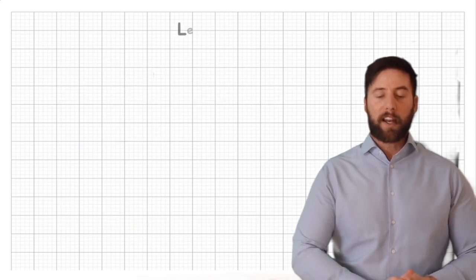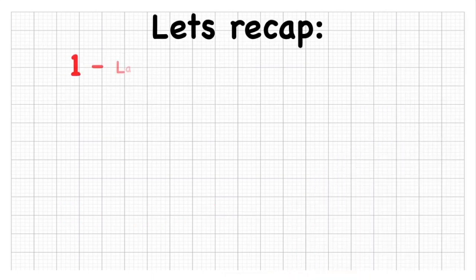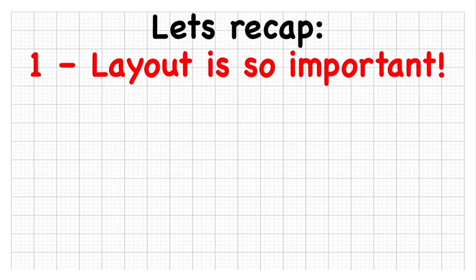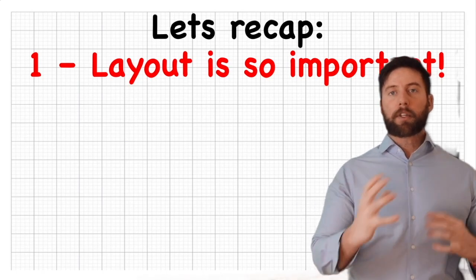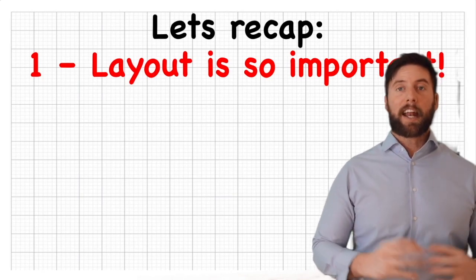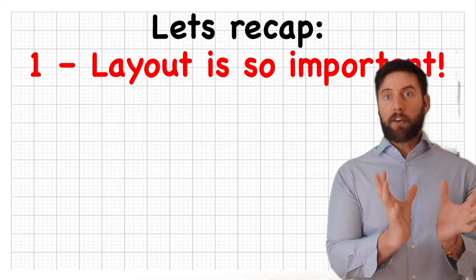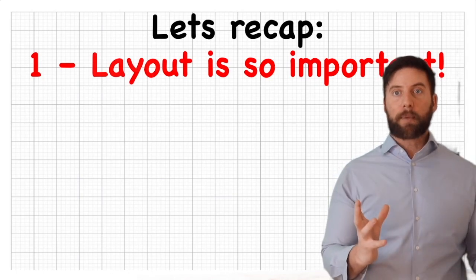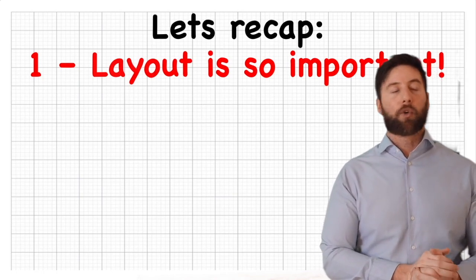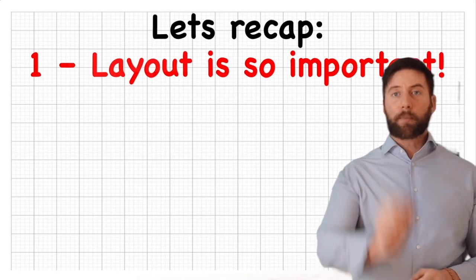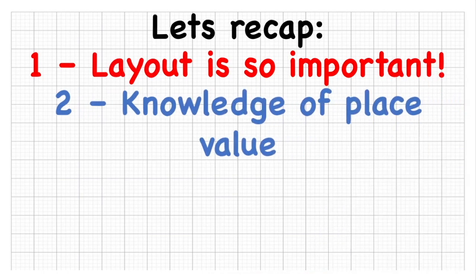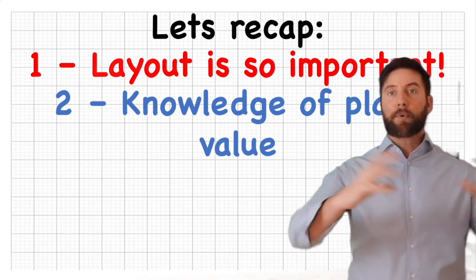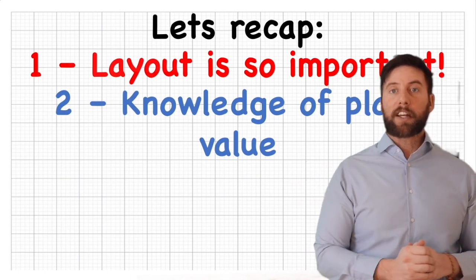Let's recap the important things from today. First, it's really important to put our layout and numbers in the correct columns. With such a huge amount of numbers being multiplied, especially with four- or five-digit numbers, the answer area becomes a large triangle formation — if you're not in the right columns it can look very messy and make it almost impossible to add the correct columns at the end. Organization and layout is really important. Second, knowledge of partitioning and place value — understanding that 32 times 25 can be broken into smaller chunks.